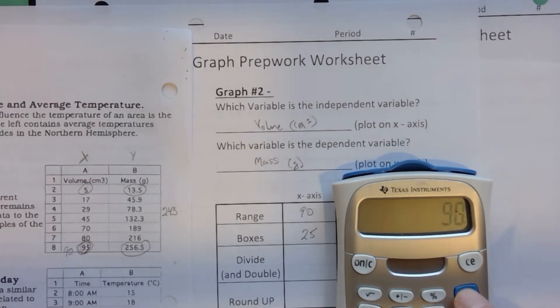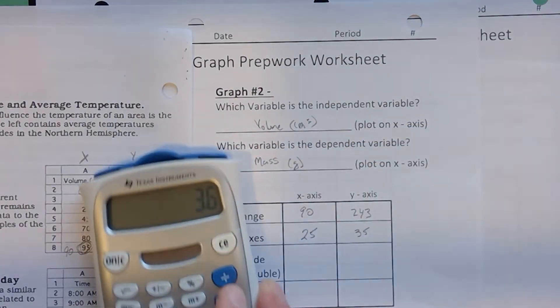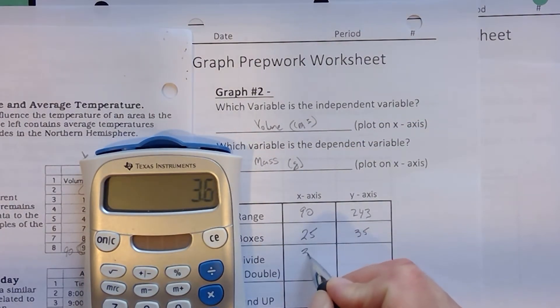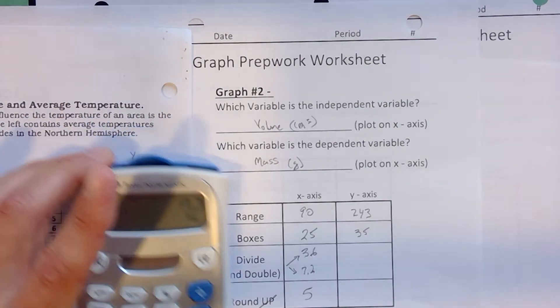So 90 divided by 25. If I get a nice number, I can stop. But I'm getting 3.6. So 3.6 is not a good number to count by. So I double that. So now I want to round. And instead of saying round up, maybe we should say round between. What would be a nice number to count by? What will be easy for you to graph? Between 3.6 and 7.2, I think I would go with a value of 5. Most people count easily by 5s.